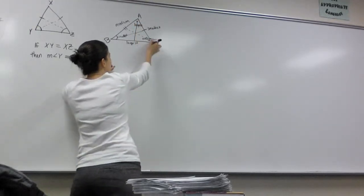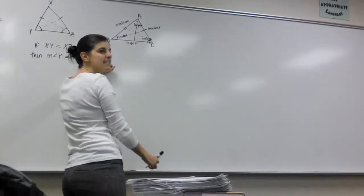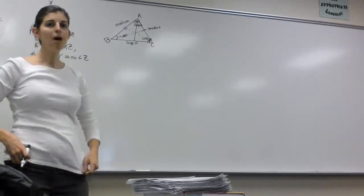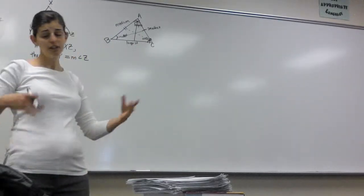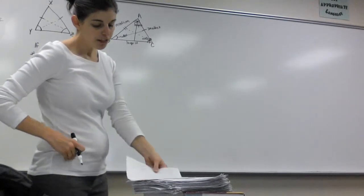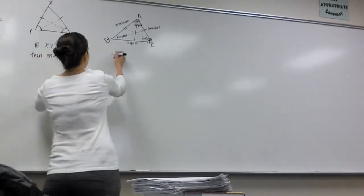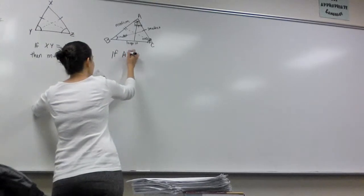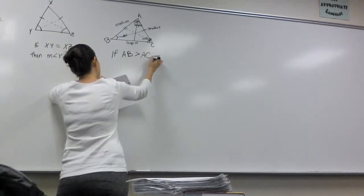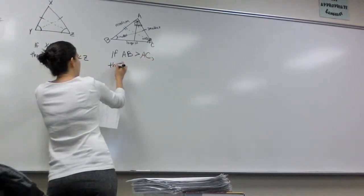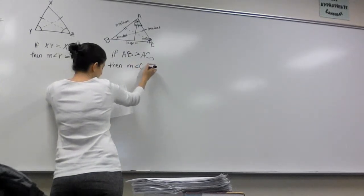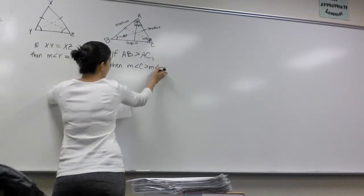We could put two arcs in C and three arcs in A. They should have the same relationship as the side they're across from. Therefore, if AB is larger than AC, then the measure of angle C is larger than the measure of angle B.